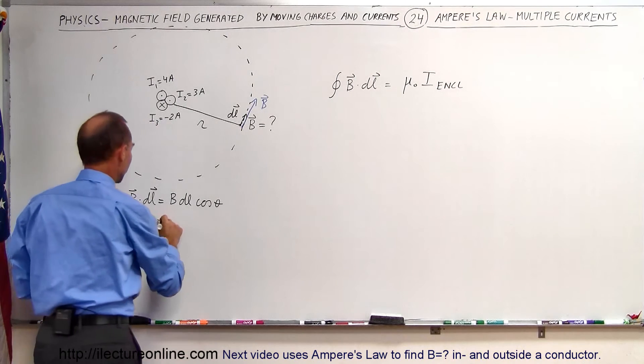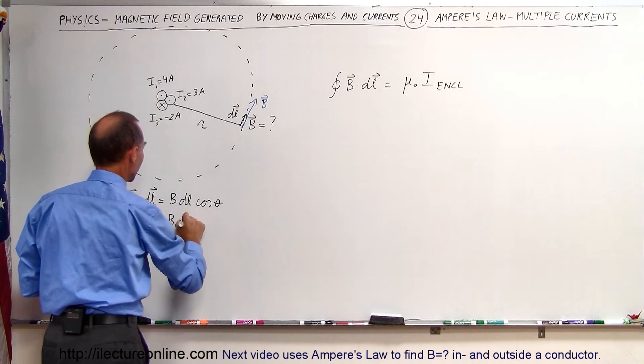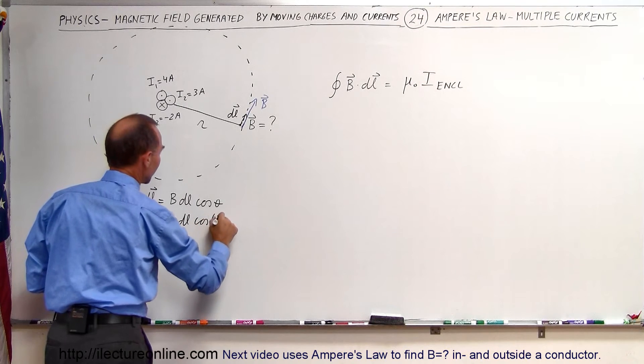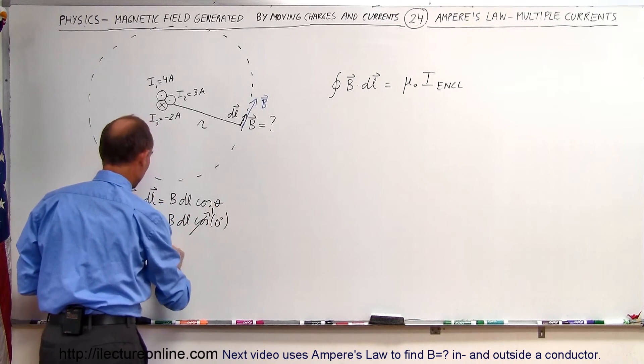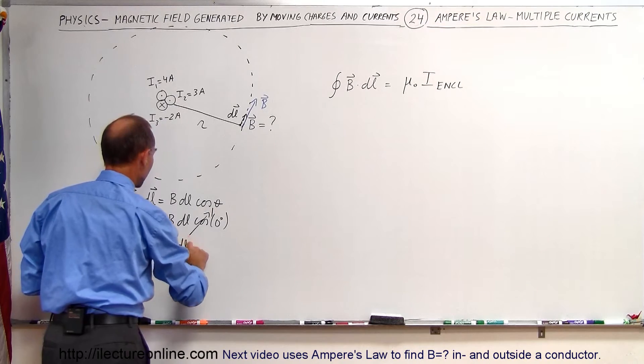We don't need to worry about that, so in this case it's going to be B times DL times the cosine of zero degrees. Note that the cosine of zero degrees is equal to one, so simply B times DL.